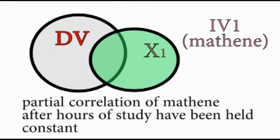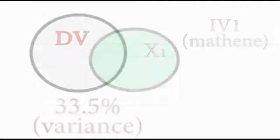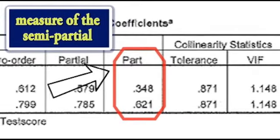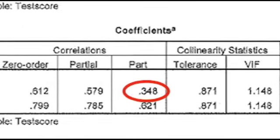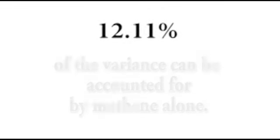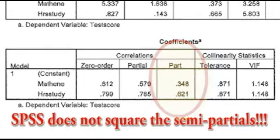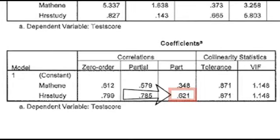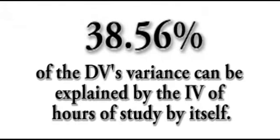The part box is a measure of the semi-partial. So if you again take these values and you square them, it gives you the unique contribution of each predictor to the model. So with the example of mathene, 0.348 squared, gives you approximately 12% of the variance that's accounted for by mathene uniquely. Keep note that SPSS does not square the part for us, you have to square that by hand. Similarly, if you take the part value of hours of study and you square that, 0.621 squared gives you around 38.56% of the variance that is accounted for uniquely by hours of study.